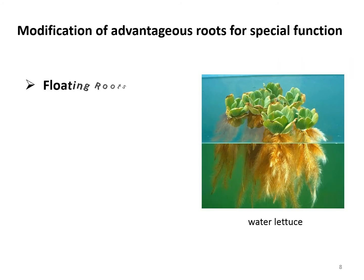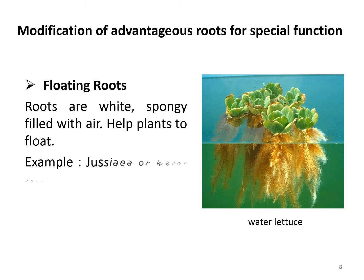Modification of adventitious roots for special functions: floating roots are spongy, white in color, and filled with air. They arise from nodes of some aquatic plants and help in floating and respiration. They are also called respiratory roots. An example is water lettuce.